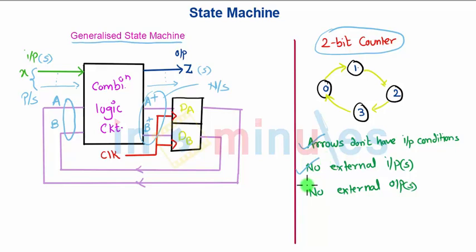There are also no external outputs. This is the difference between a counter and a state machine, though both are sequential circuits.